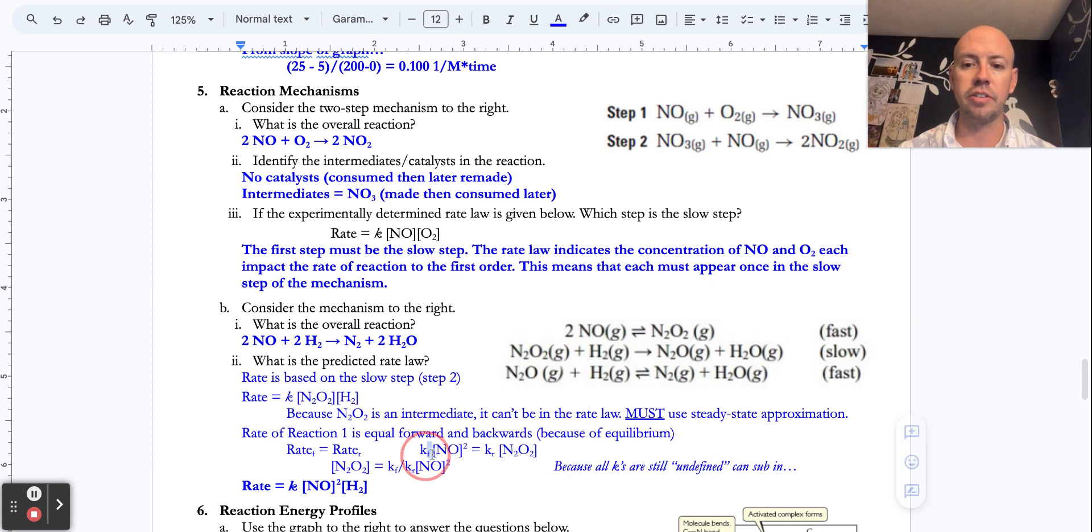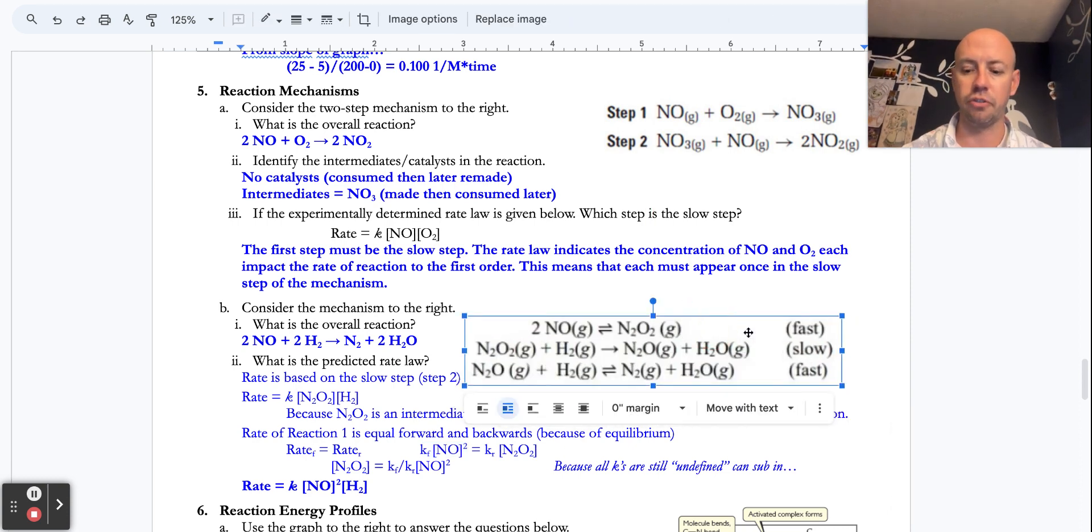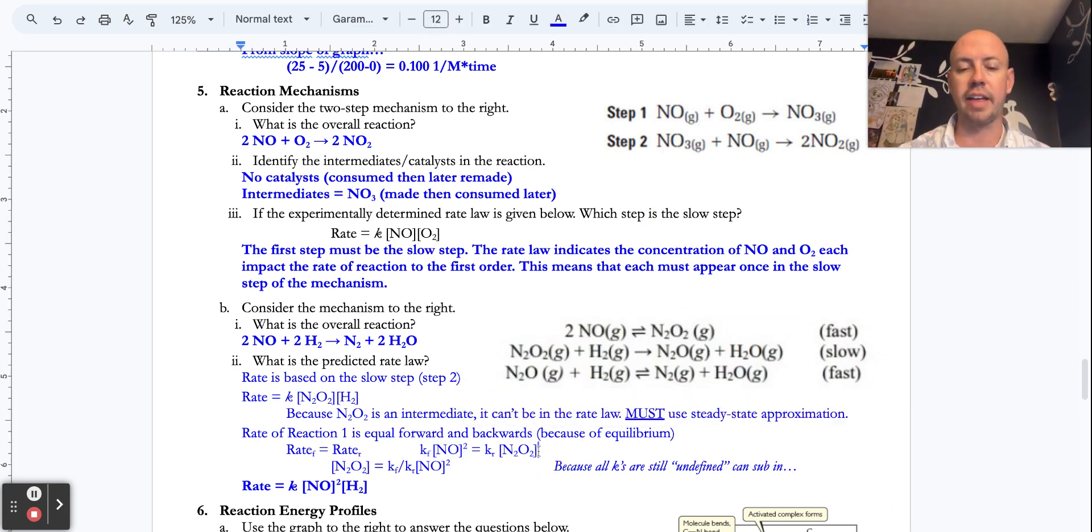So I put somewhat arbitrarily here, I could make a rate law for each one. It's an elementary step. Well, this one would be second order with NO because NO has to run into NO. And then the rate would be K times that second order. The rate of the reverse would be K times the chemicals that run into each other, which is just that single molecule, unimolecular collision.